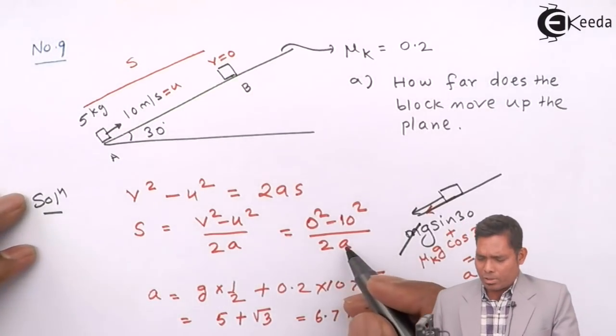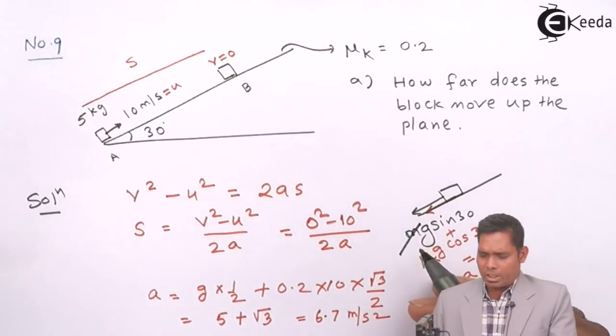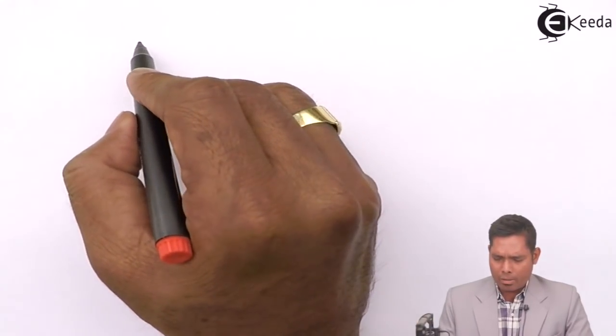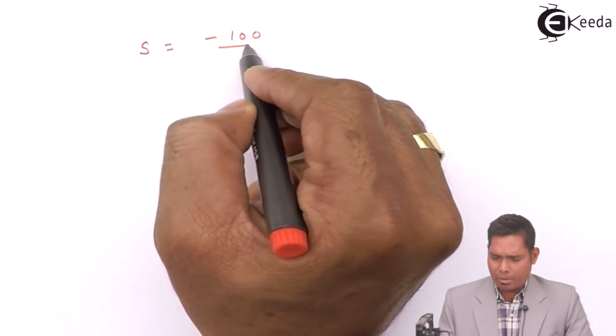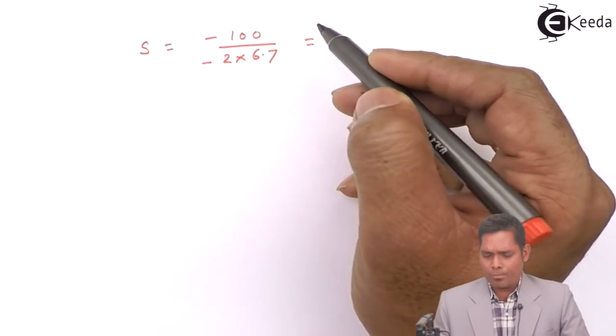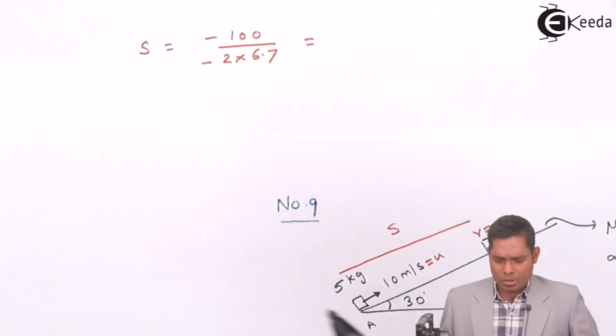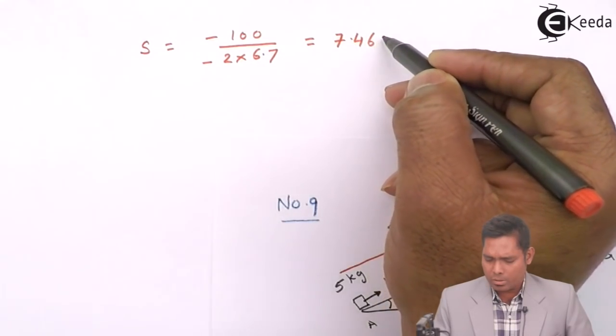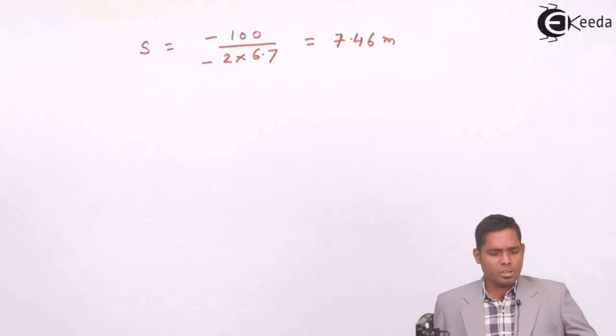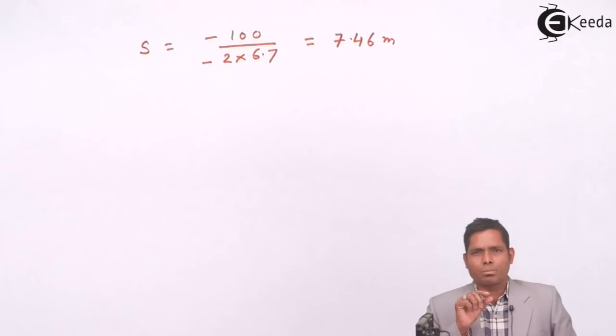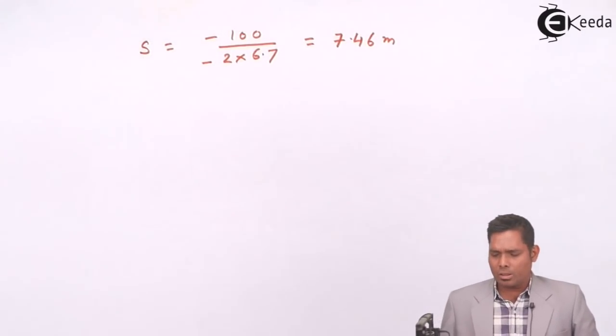If I put acceleration here, and obviously it is in the downward direction, so with the sign it is negative. So negative because it is preventing, it is a retardation. So I will write S as -100 divided by 2 into 6.7. That is also minus, minus minus plus. So displacement is positive, and this comes out to be 7.46 meters. So this is the displacement in the upward direction. So this block is moving up to 7.46 meters.